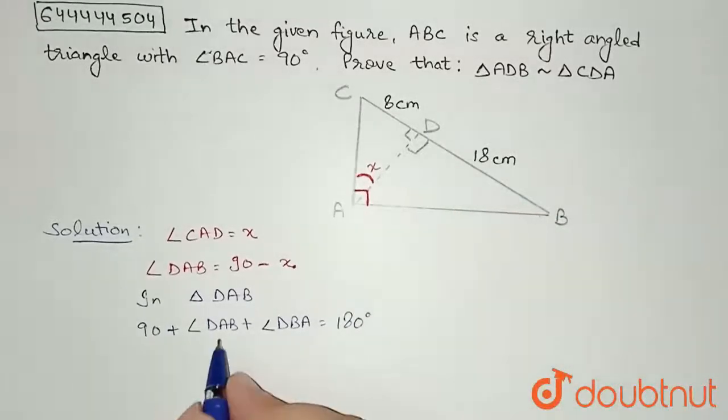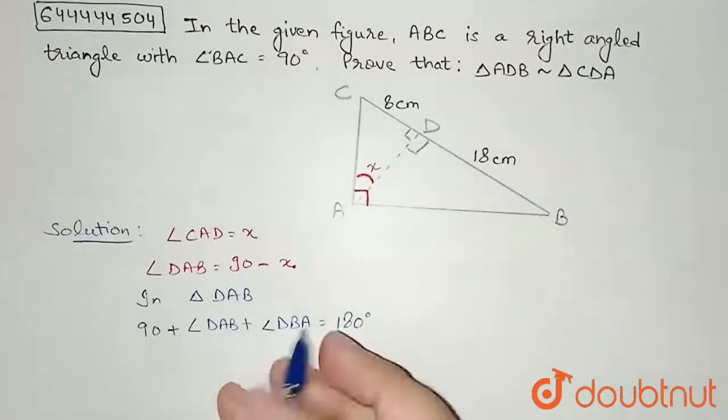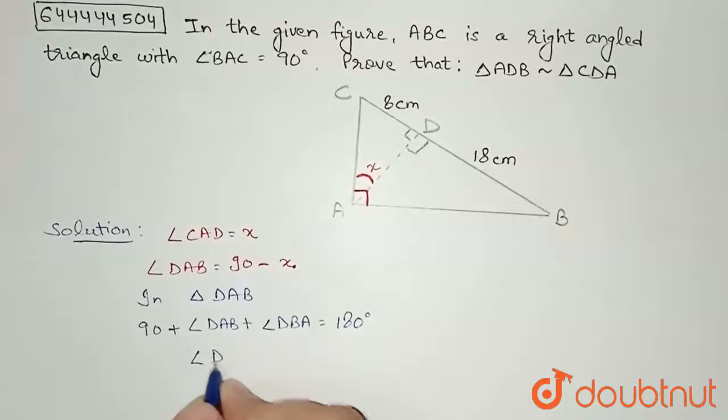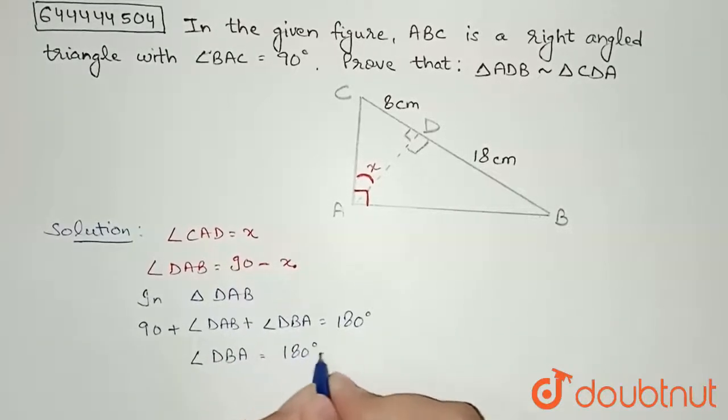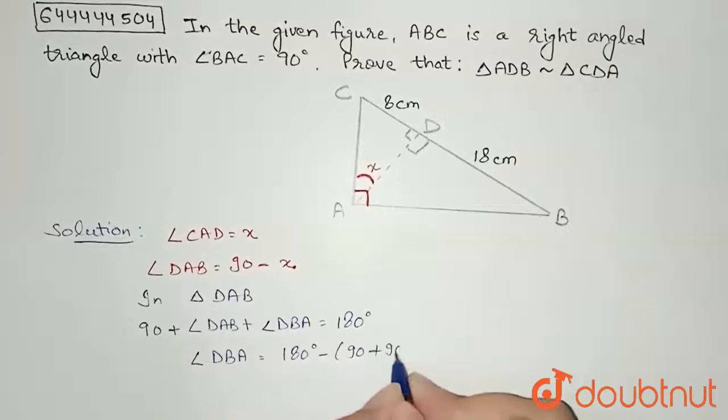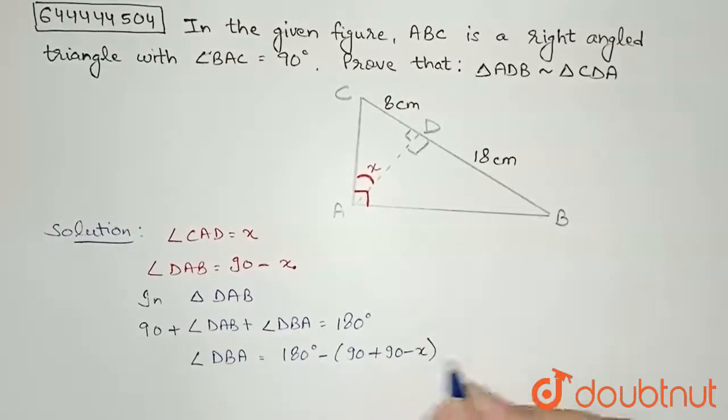Angle DAB we know is 90 minus x. So from here we can say that angle DBA equals 180 degrees minus 90 plus 90 minus x. So we will get angle DBA equal to x from here.